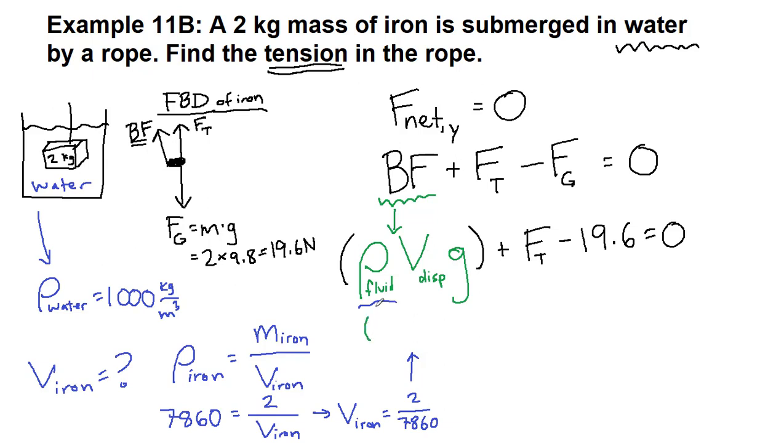So we have the fluid is the water, 1,000, the volume is 2 over 7,860, and then our acceleration of gravity, g, is 9.8, the way it has been for a long time.